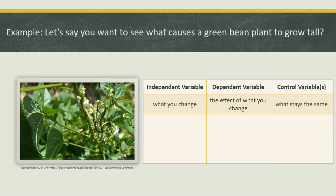Let's say you want to test the quantity of water and the effect the quantity of water has on the growth of your green bean plant. The independent variable would be the amount of water. The dependent variable is the height of the green bean plant — so how tall did the green bean plant grow?